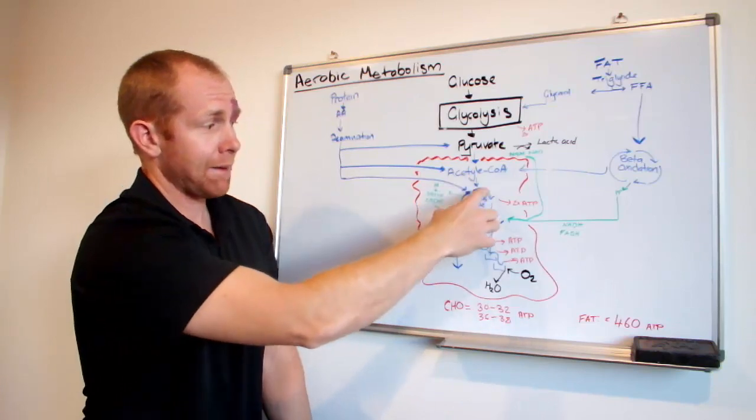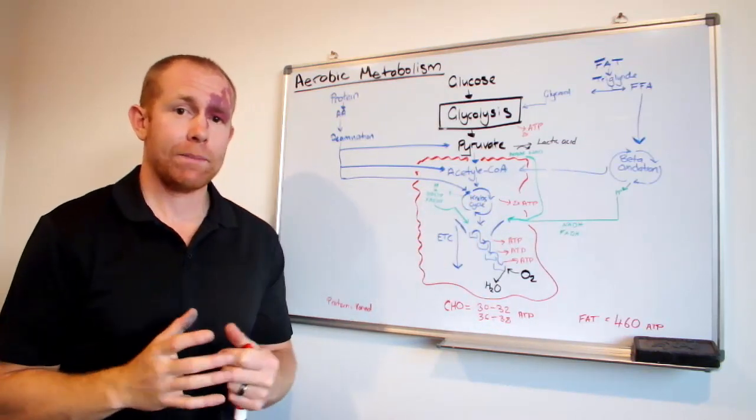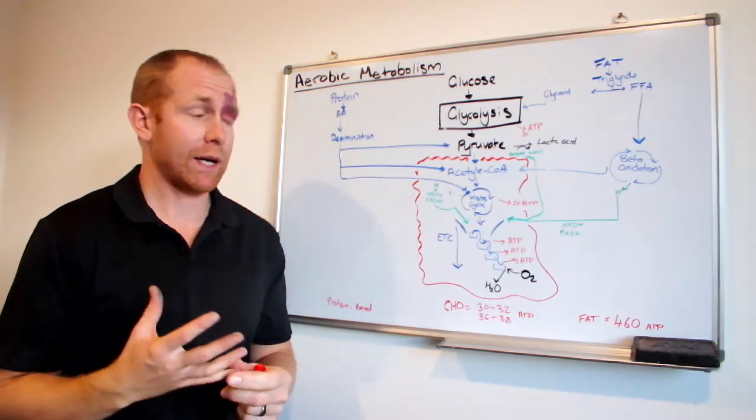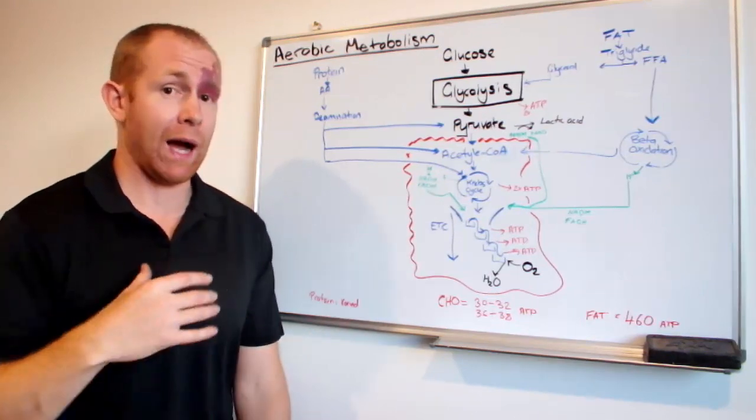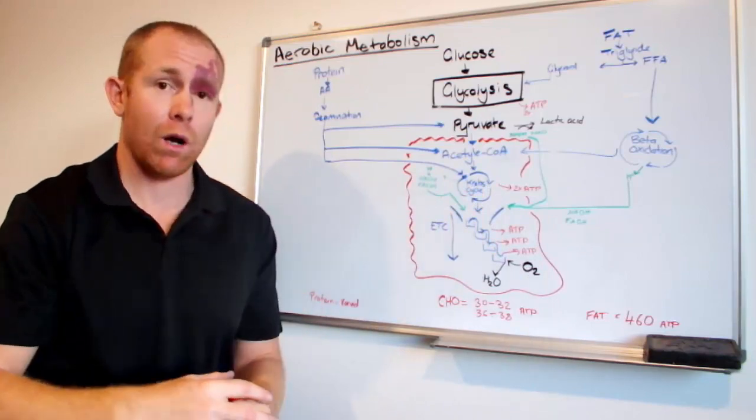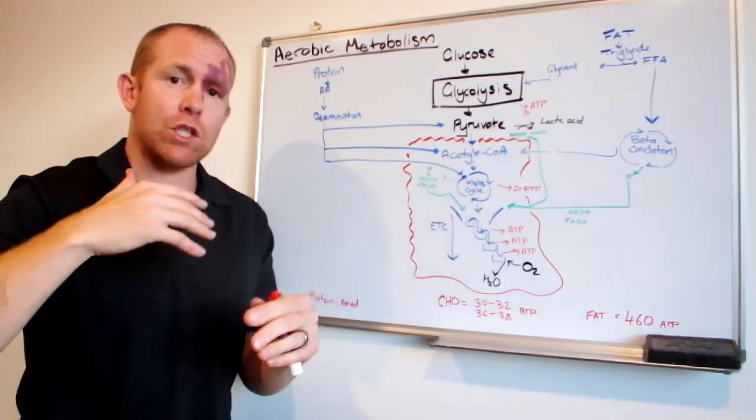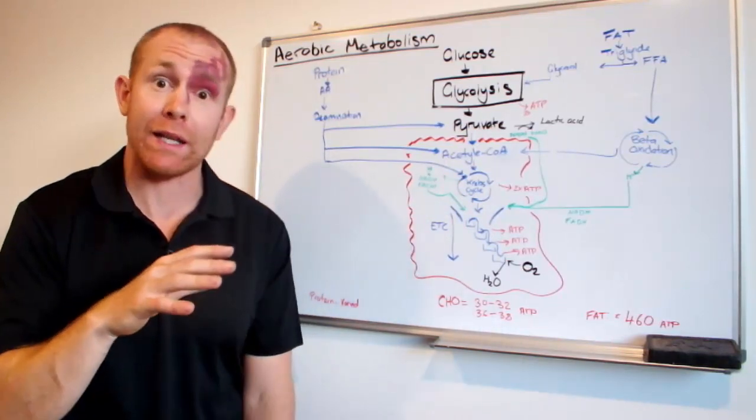Now acetyl-CoA comes into what we call the Krebs cycle. The Krebs cycle is often also called the citric acid cycle as well. Krebs is just the last name of the dude who found it, Hans Krebs. So in the Krebs cycle, acetyl-CoA goes into there. And with the Krebs cycle, a bunch of more complex reactions happen. We're going to skip over the finer details today.